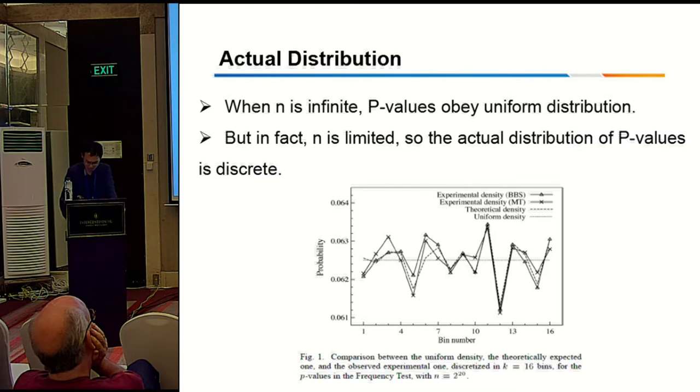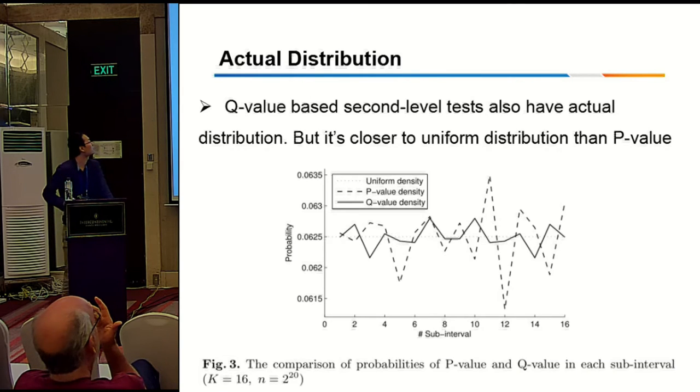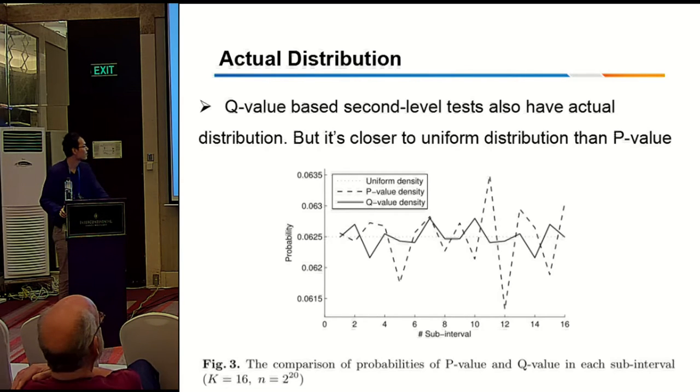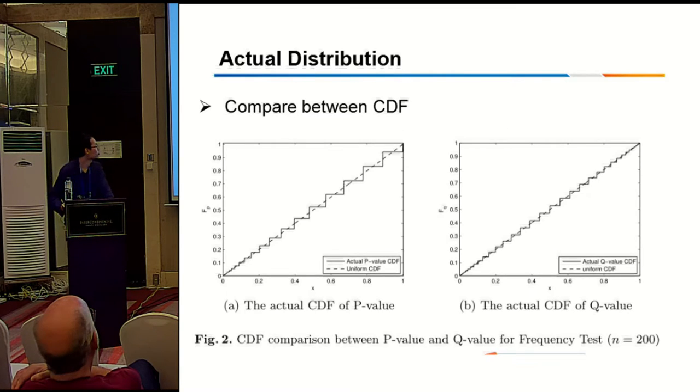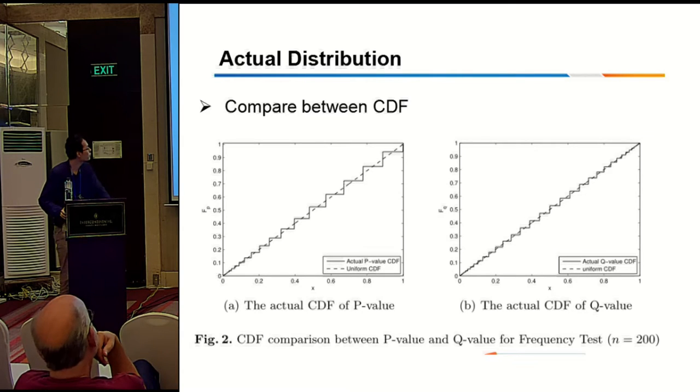And this shows the actual distribution. You can see the Q-value distribution is closer to the uniform distribution. To show this difference, I show the cumulative distribution function between P-value and Q-value. The block size equals 200, which means a block only consists of 200 bits. You can see clearly that the Q-value is better, is more uniform.